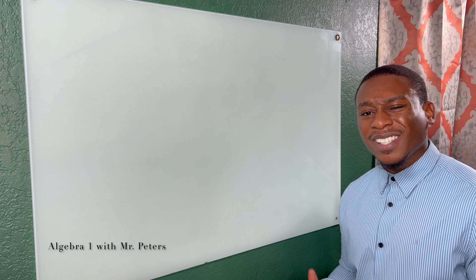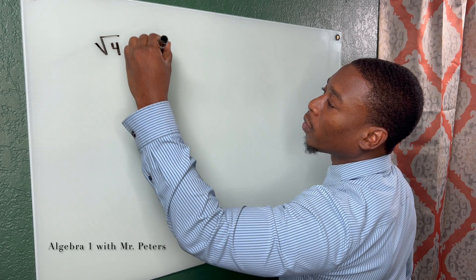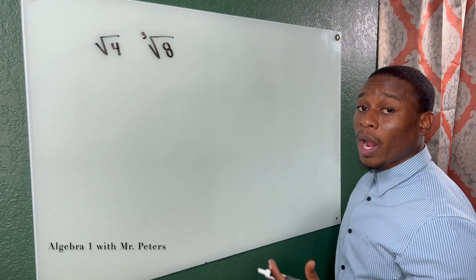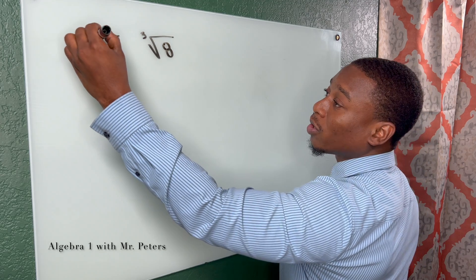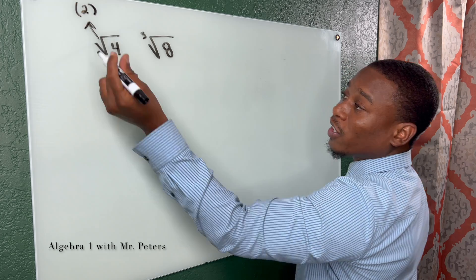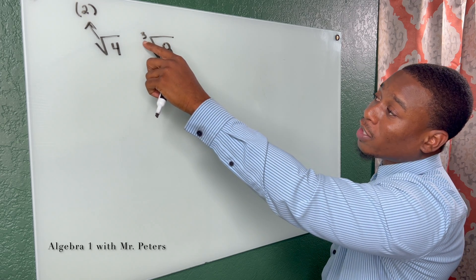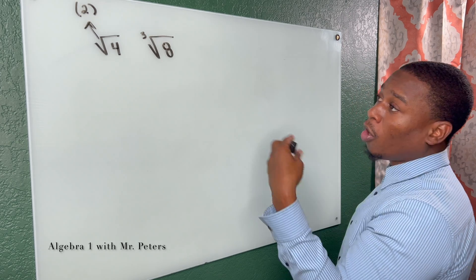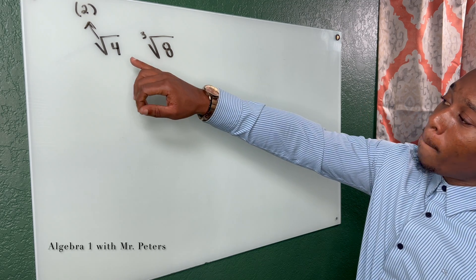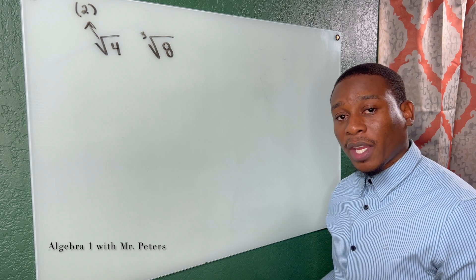The first thing we need to understand is the difference between square roots and cube roots. When we look at square roots, there will not be a number in the index — we assume the index is 2. Otherwise we will see a number such as the cube root index 3, or 4th root, and so forth.